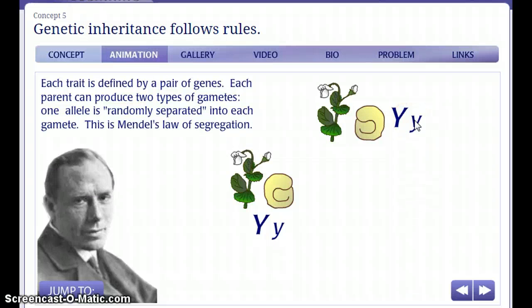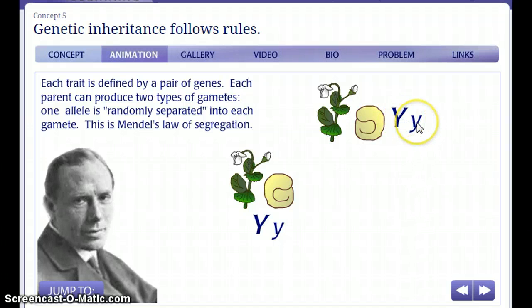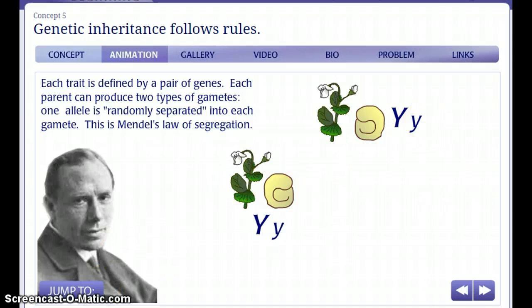As you know, each trait is defined by a pair of genes. Each parent can produce two types of gametes, and according to Mendel's law of segregation, one allele is randomly separated into each gamete. Punnett invented the Punnett Square to keep track of the alleles in the gametes.